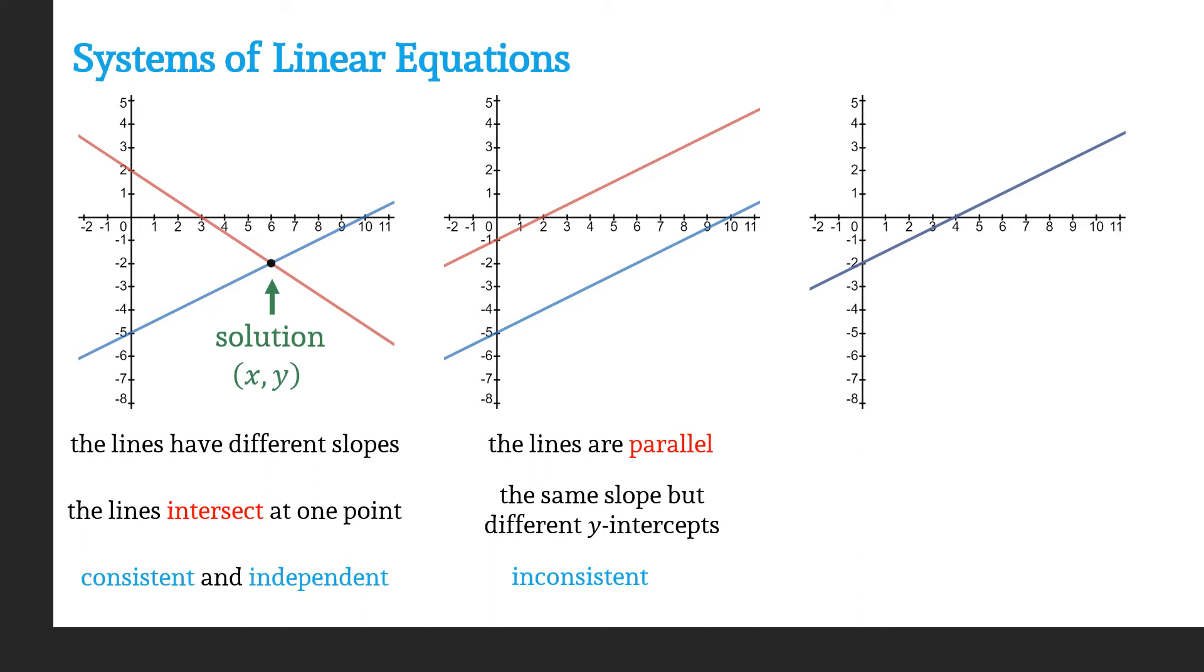It's inconsistent because there is no solution. So when we answer this question, whether you're solving it graphically or solving it algebraically, the answer we'll write is no solution. Because what we're looking for is an ordered pair that simultaneously satisfies both equations. But if they're parallel and run alongside each other, that'll never happen.